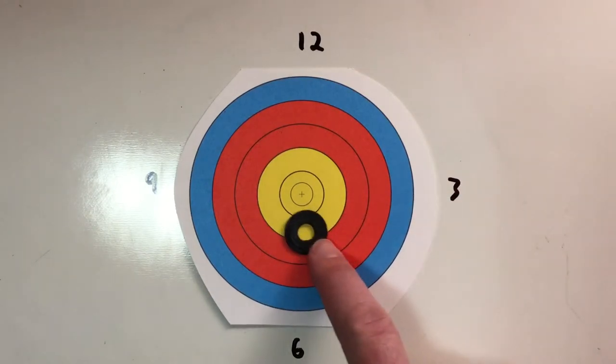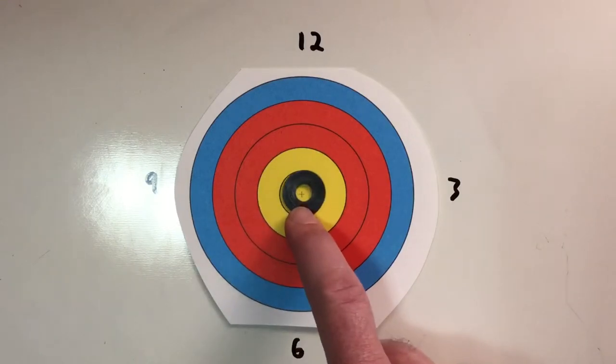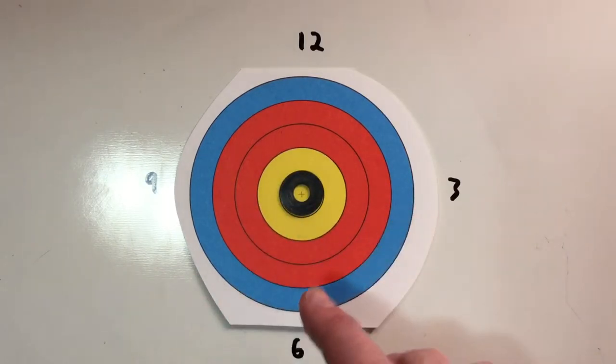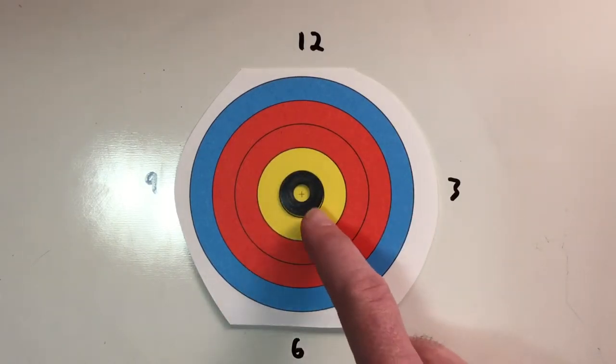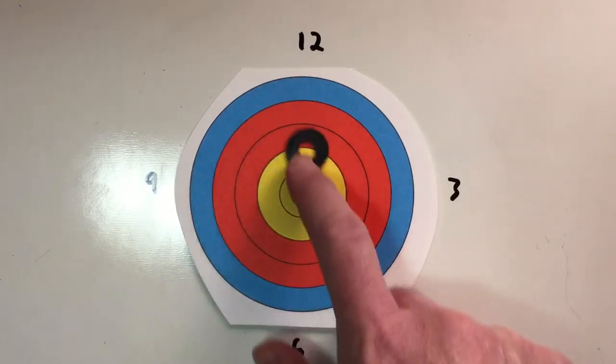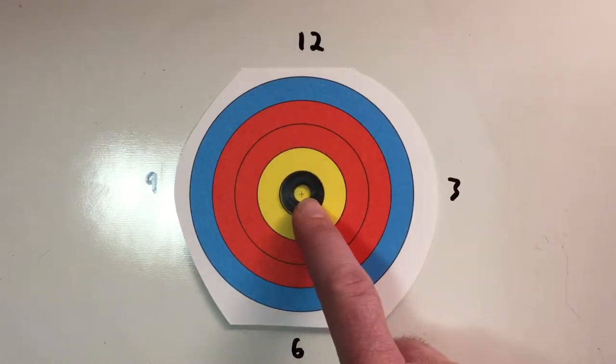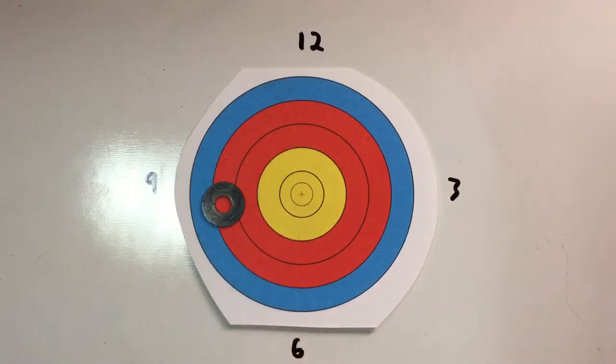The idea is that you want to make sure you set up in the same place every time. Some archers like to set up in the center and not really worry too much about aiming. Some archers like to set up either way off to the side, high, low, whatever it may be, and then kind of work their way in. The point is that you set up in the same way every time.